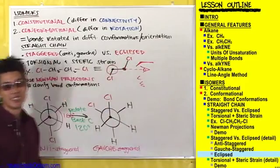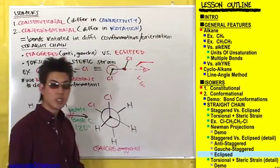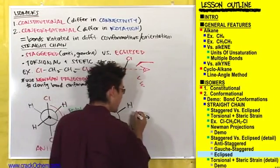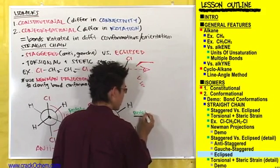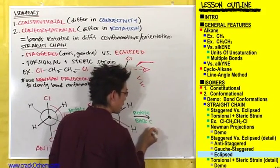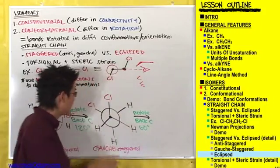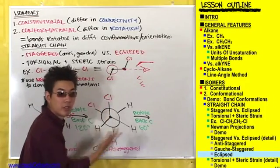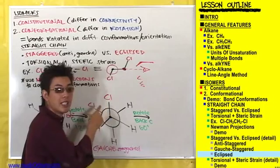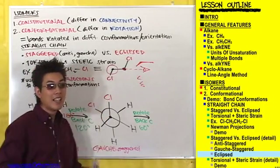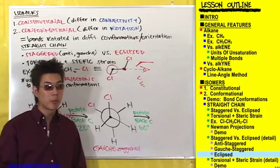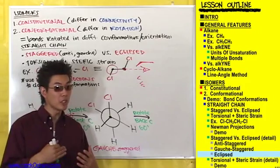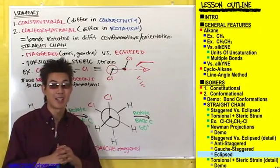We're going to draw an arrow, and right above that arrow we'll note that we are rotating the back carbon 60 degrees. So that this chlorine on the back carbon will rotate directly behind this chlorine on the front carbon — the front chlorine will be eclipsing the back chlorine. You can see why this next Newman projection is going to be called an eclipsed conformational isomer, because atoms and bonds on the front carbon will eclipse atoms and bonds on the back carbon.